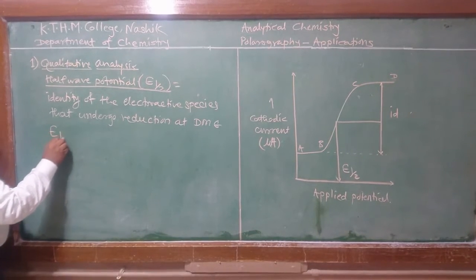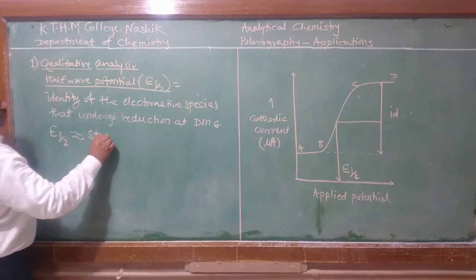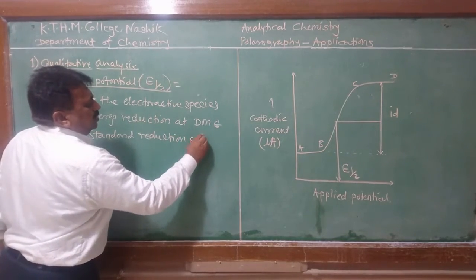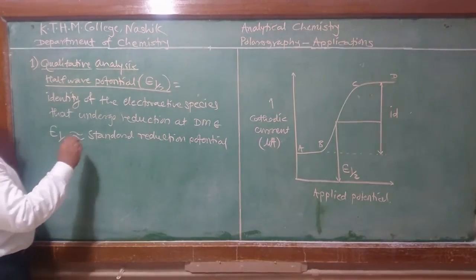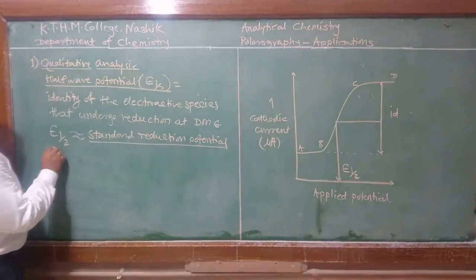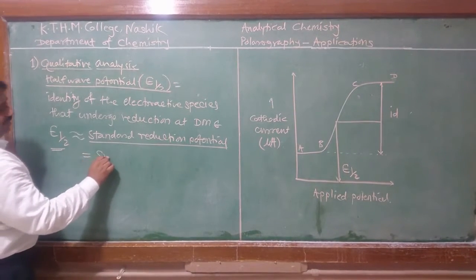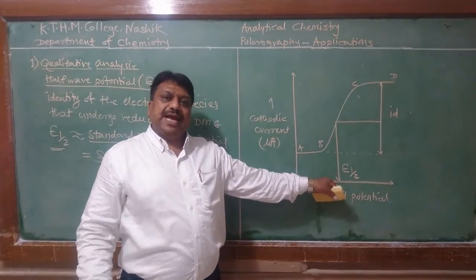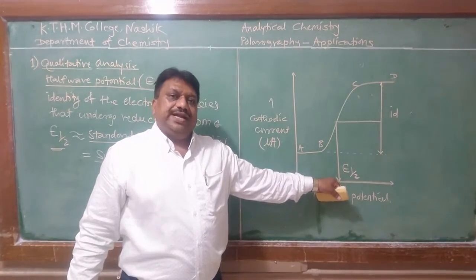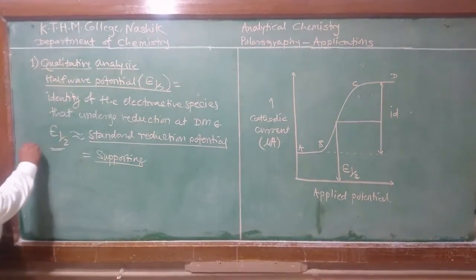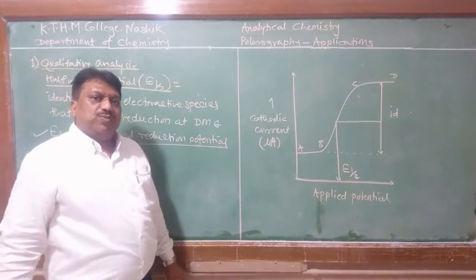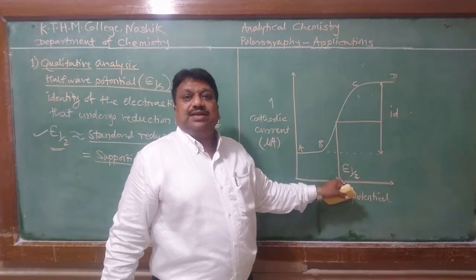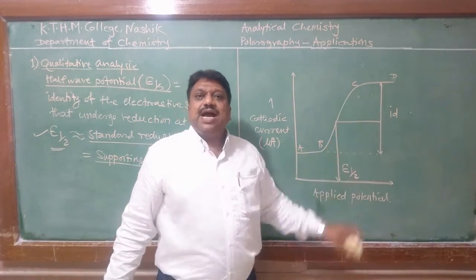The half-wave potential is nearly equal to the standard reduction potential of the metallic species. The experimentally determined half-wave potential for a specific analyte is matched with the theoretical value for identification purposes. Therefore, qualitative analysis in polarography is done on the basis of half-wave potential — that is, the potential at half the diffusion current, at which the analyte undergoes reduction at the dropping mercury electrode.